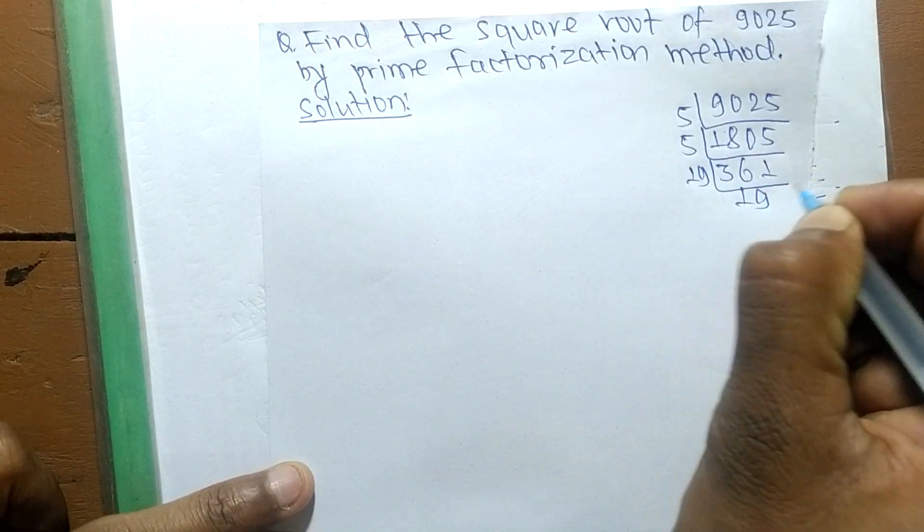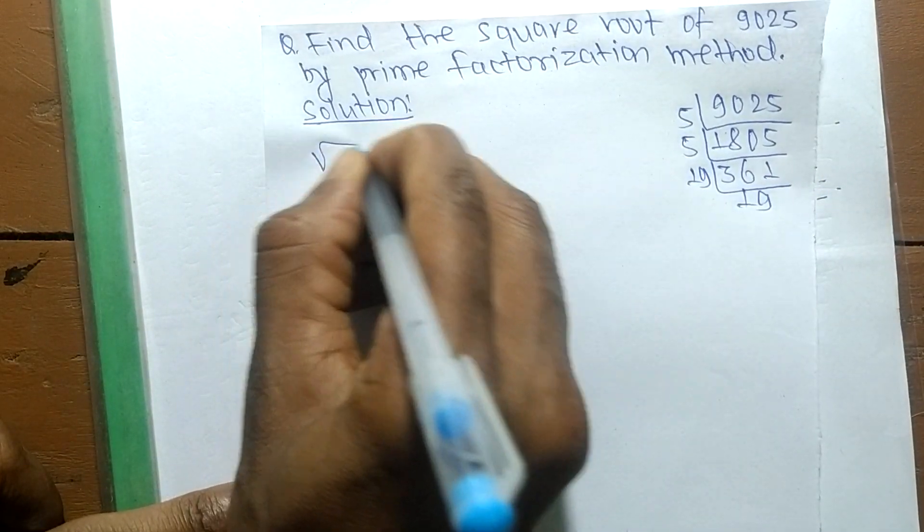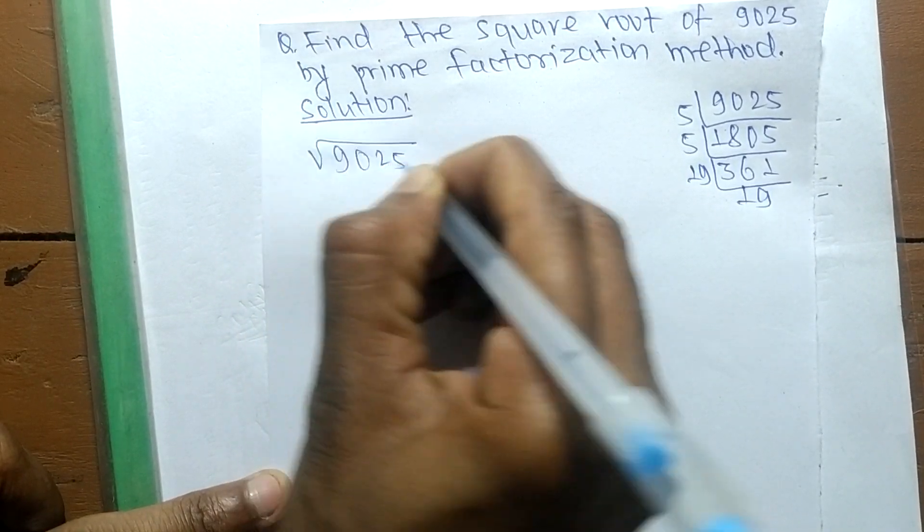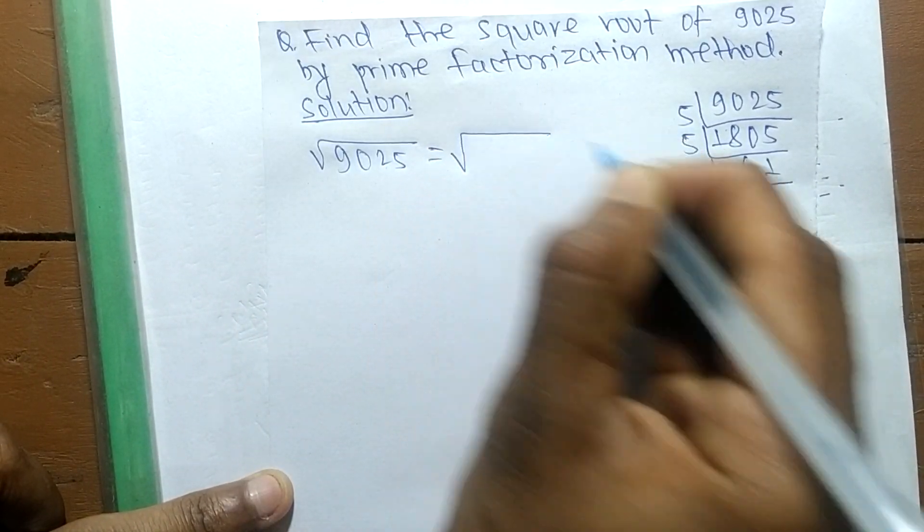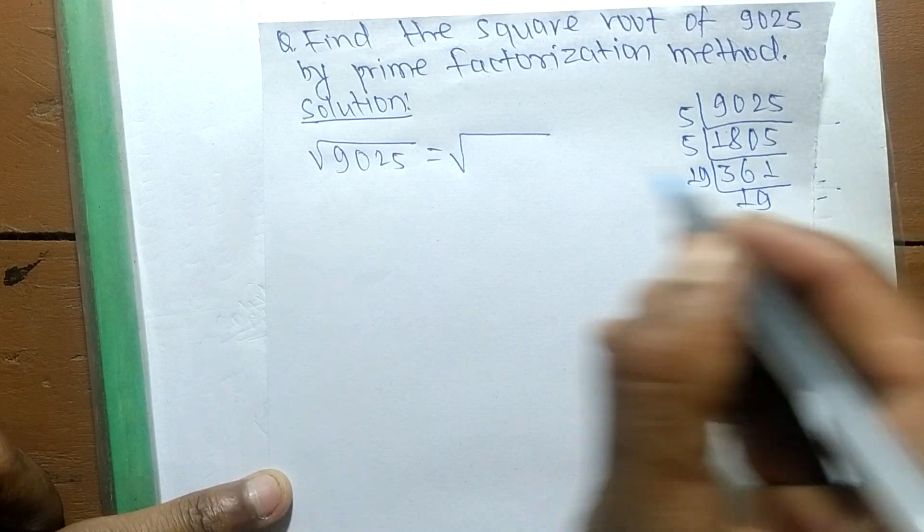19 times 19. So the square root of 9025, from these prime factors, we can write